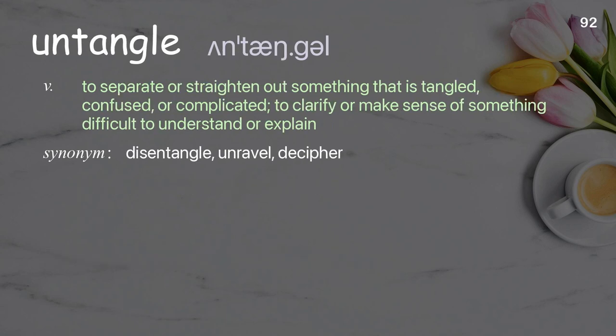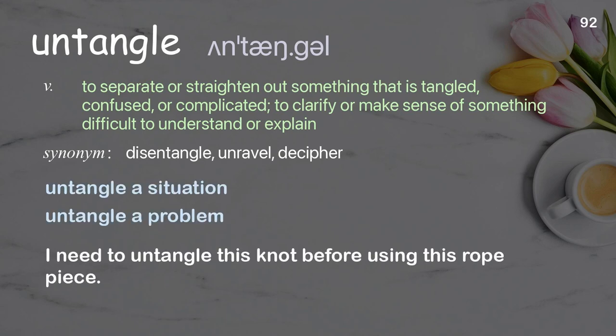Untangle: to separate or straighten out something that is tangled, confused, or complicated; to clarify or make sense of something difficult to understand or explain. Examples: untangle a situation, untangle a problem. I need to untangle this knot before using this rope piece.